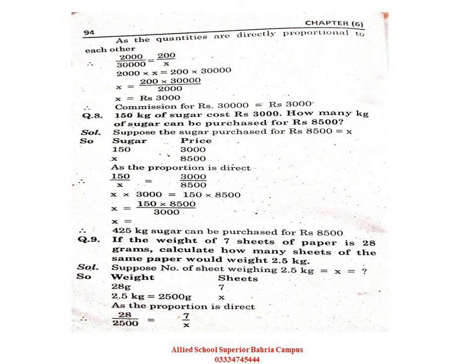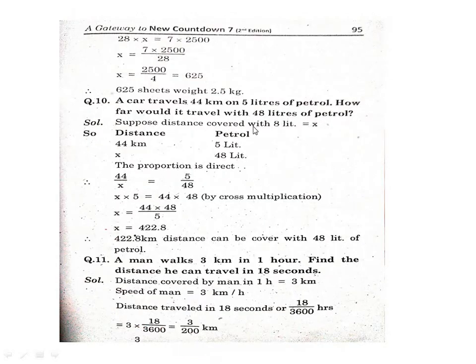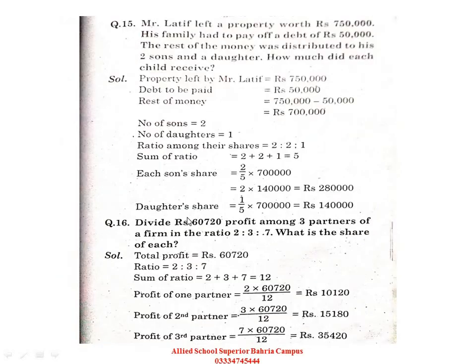We can see mostly direct relation questions appearing here. You need to apply the same method up to Question Number 11. Question Number 15 is slightly different students — you can call these ratio questions.